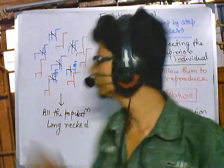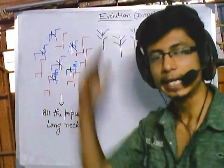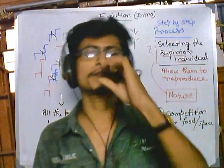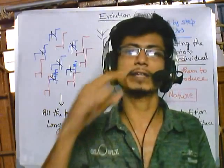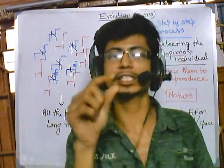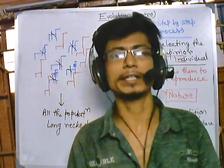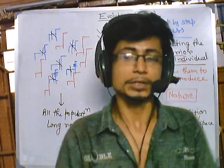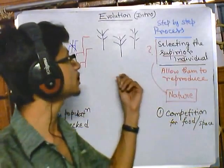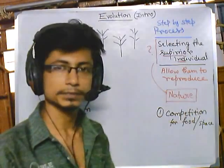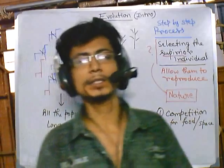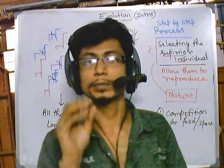We have used the example of giraffe necks, but there are also other examples, like finches — where beak size and shape illustrate different evolutionary concepts. In each case, the same evolutionary principles apply. In the next video, we'll be talking about Charles Darwin's postulates of evolution.